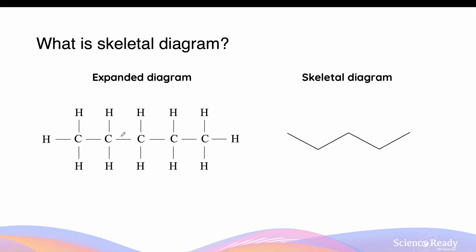On the left here we have an expanded diagram of the hydrocarbon pentane, which has 1, 2, 3, 4, 5 carbons surrounded by 12 hydrogens. The skeletal diagram on the right hand side is also pentane. Each of these corners of the skeletal diagram is going to indicate a carbon, so there are 1, 2, 3, 4 and 5 corners indicating 5 carbons.